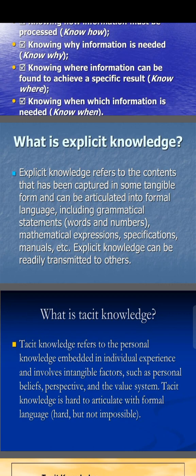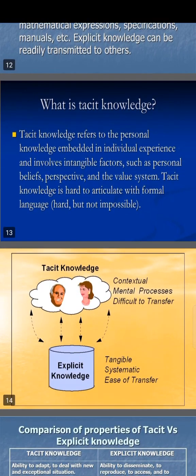Explicit knowledge can be readily transmitted to others. What is tacit knowledge? Tacit knowledge refers to the personal knowledge embedded in individual experience and involves intangible factors such as personal belief, perspective and value system. Tacit knowledge is difficult to articulate with formal language.